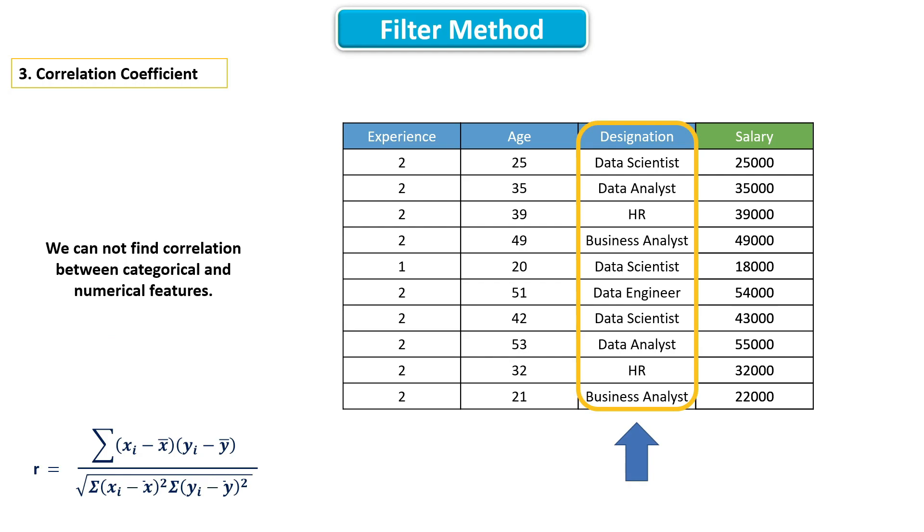Finally, we cannot calculate correlation between a categorical and numerical feature. So, we cannot apply correlation coefficient on any categorical feature. In case, if the independent features are categorical and the dependent feature is numeric, then either we have to use t-test or ANOVA. In the next video, we will discuss about ANOVA and I'm going to teach you how to calculate ANOVA by hand. Let's see.